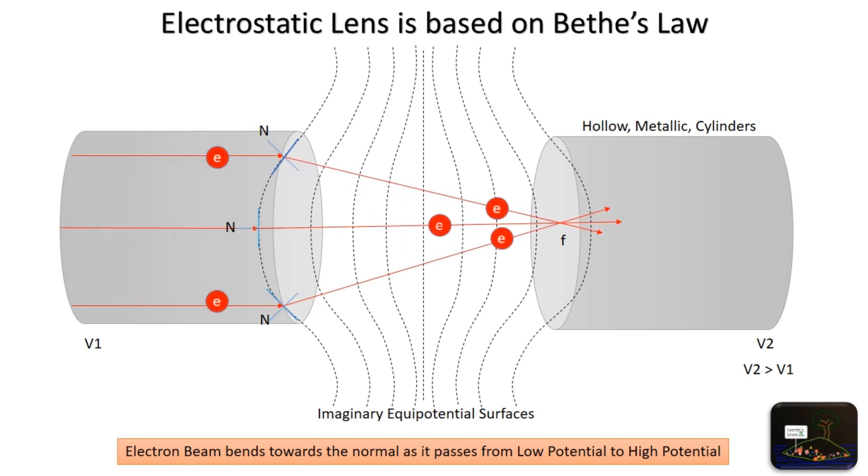The electric force acting on electrons can be resolved into two components, F parallel and F perpendicular. F parallel will accelerate the electron in further direction, while F perpendicular will bend it either downward or upward to converge.